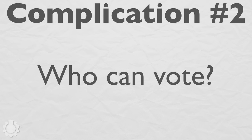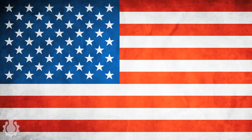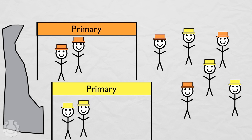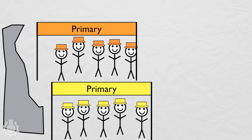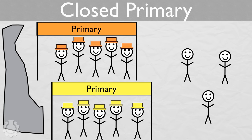Complication number two: who can vote? In the national presidential election, all American citizens over the age of 18 can vote, with two exceptions. But primaries are in-state elections with lots of different rules. Most states and parties will only let you vote in the primary if you are an official member of the party. This is called a closed primary because the voting is closed to non-party members. But some citizens are independents and not registered with any party — if you are an independent and live in a state with closed party elections, tough luck. No voting for you.